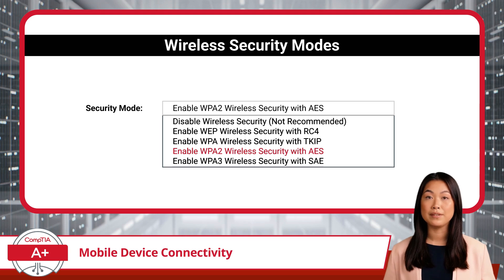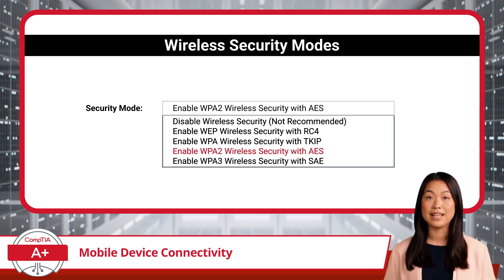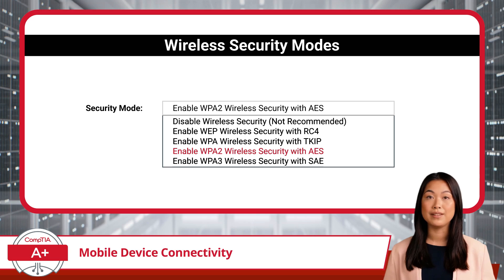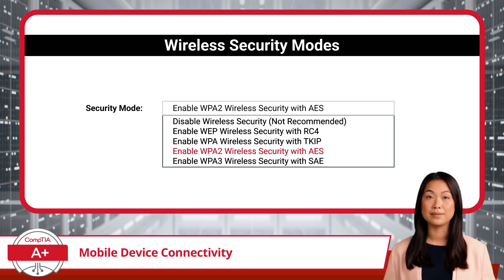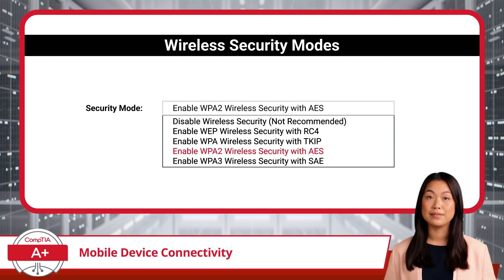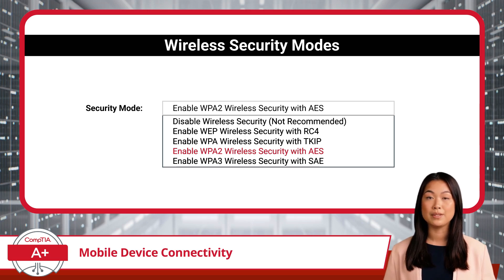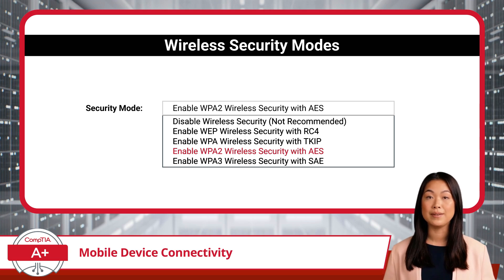Moving further up the ladder of security, we come to WPA2, or Wi-Fi Protected Access 2. Enabling WPA2 builds upon the foundation of WPA by employing AES — Advanced Encryption Standard — as its encryption algorithm, providing even stronger protection for your wireless network compared to WPA. Using WPA2 is like upgrading from a sturdy deadbolt to a sophisticated security system with motion sensors and surveillance cameras.